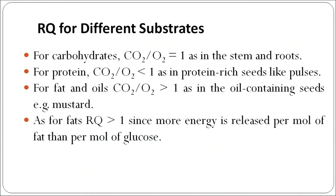For carbohydrates, this RQ is 1. For proteins — found in pulses and protein-rich seeds — the respiratory quotient is less than 1. For fats, the respiratory quotient is less than 1. Fats are present in oil-containing seeds, and the energy produced per molecule of fat is more than the energy produced by the metabolization of one molecule of glucose.